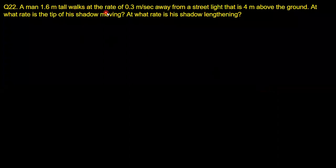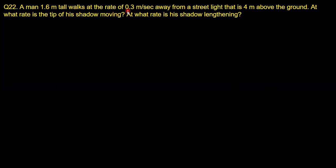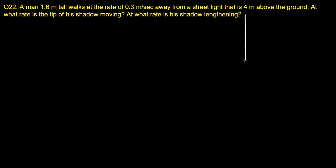A man 1.6 meters tall walks at the rate of 0.3 meters per second away from a street light 4 meters above the ground. At what rate is the tip of his shadow moving, and at what rate is his shadow lengthening? These two statements are different — shadow lengthening and tip moving are not the same thing.